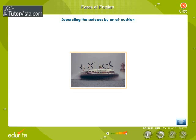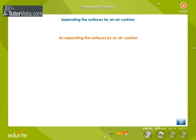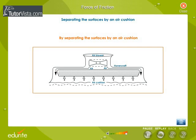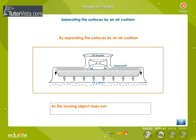Separating the surfaces by an air cushion: for example, a hovercraft can travel over rough land, swamp or sea, as the moving object does not come in contact with the other solid surface, and thus the frictional forces are reduced.